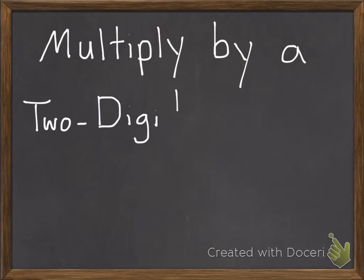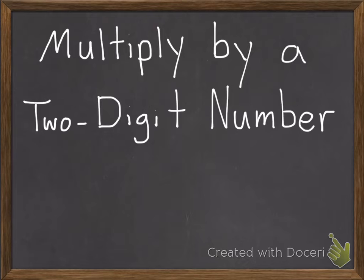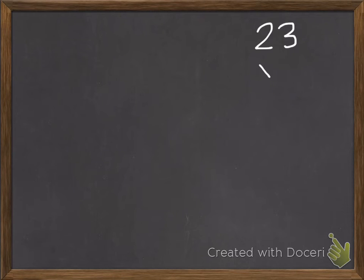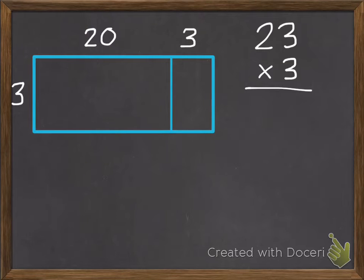Today we're going to multiply by a two-digit number. If we have a multiplication problem like 23 times 3, yesterday we used an area model to help us solve this, like this.